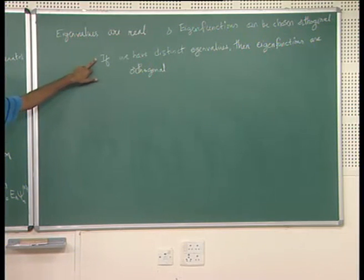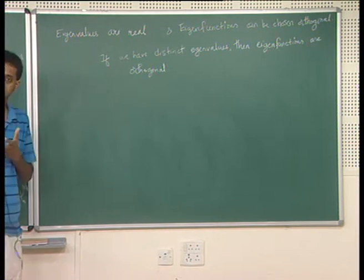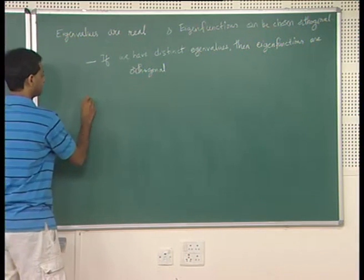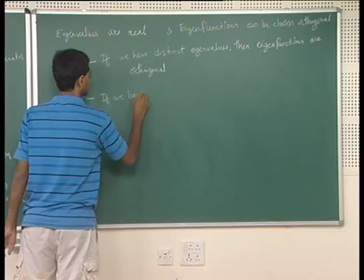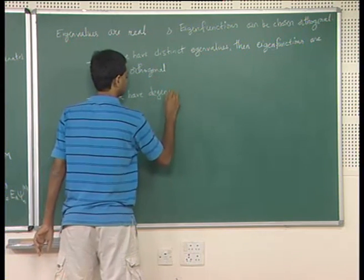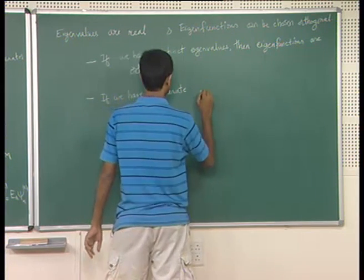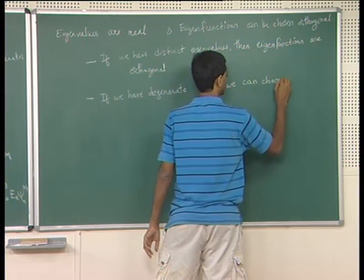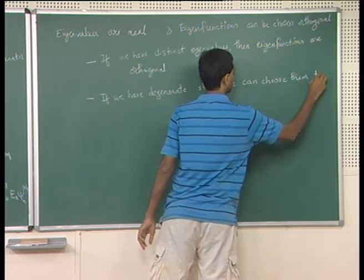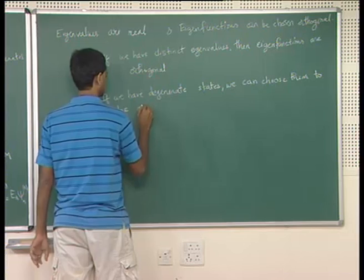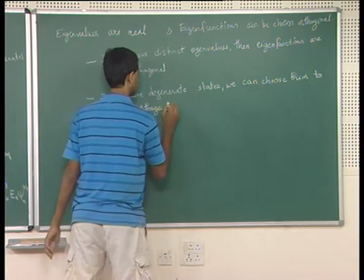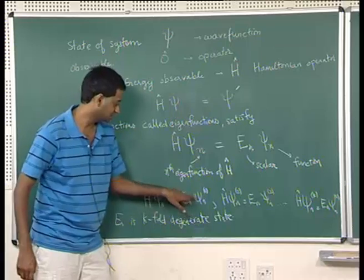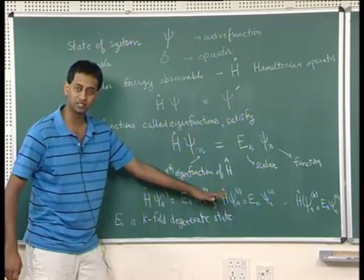If we have distinct eigenvalues, then eigenfunctions are orthogonal. If you have two different eigenvalues, the corresponding eigenfunctions will be orthogonal. In the degenerate case, we can also choose the eigenfunctions to be orthogonal — in a case where all eigenfunctions have the same eigenvalue E_n, you can choose different ones to be orthogonal.